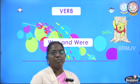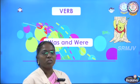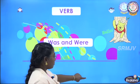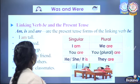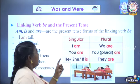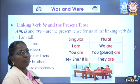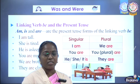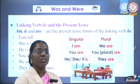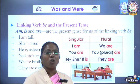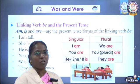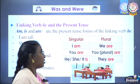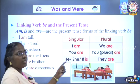The topic we are going to see today is was and were. Linking verb be in the present tense — when you use the be form in present tense, you will be using is, are, or am. When you use it in past tense, you will be using was and were.